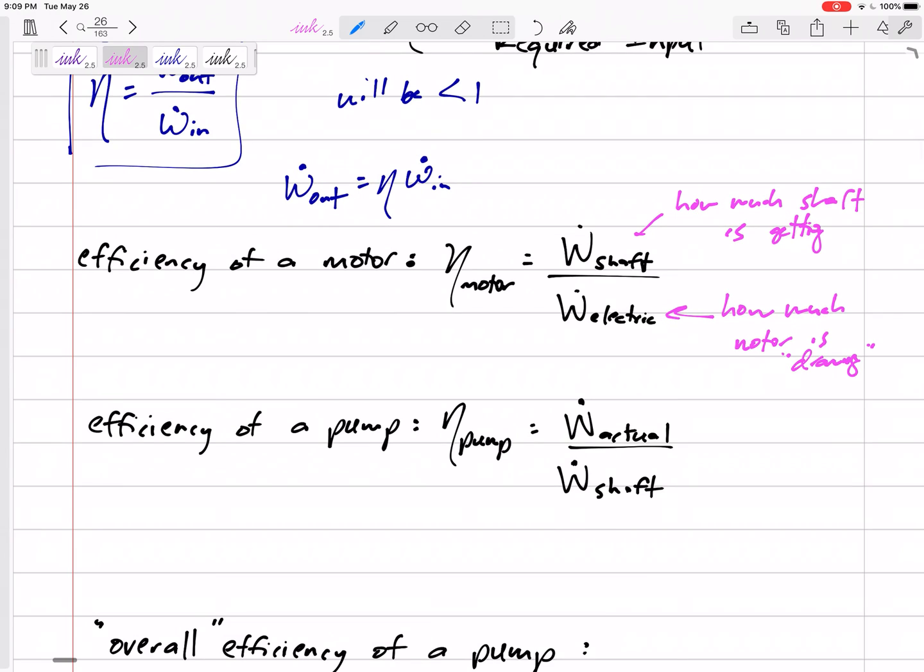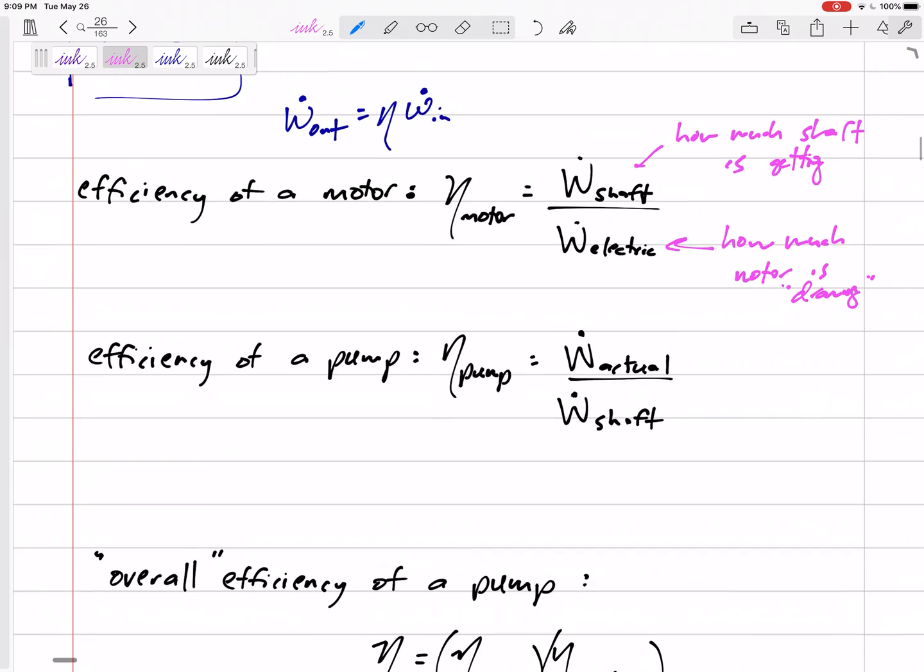How much work or power the shaft is really producing. So we might have to put, you know, 40 kilowatts in just to get 35 kilowatts of shaft power or shaft work.